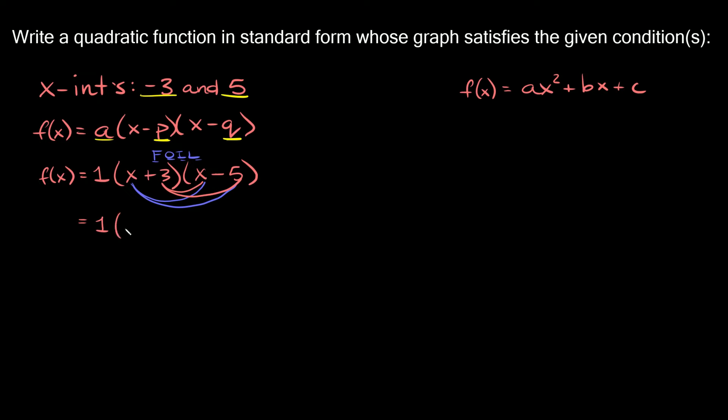Okay, so then in parentheses here we're going to have x squared minus 5x plus 3x minus 15. Okay, now here we can combine like terms right, so we have a minus 5x plus 3x, so that's equal to negative 2x or minus 2x, so then this is all equal to 1 times x squared minus 2x minus 15.